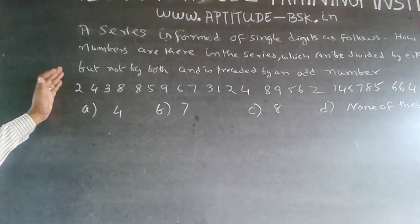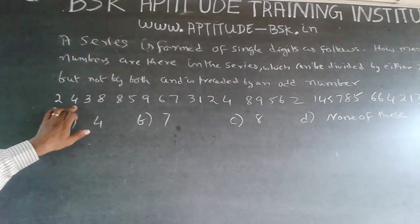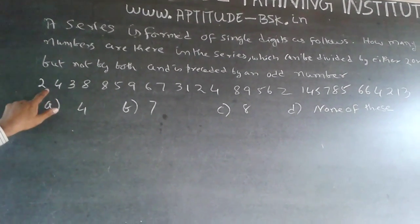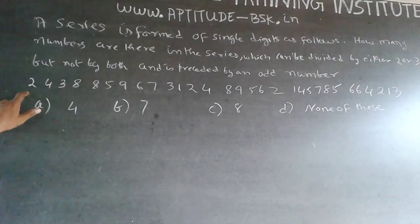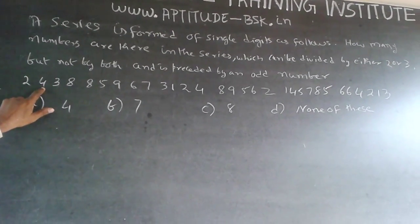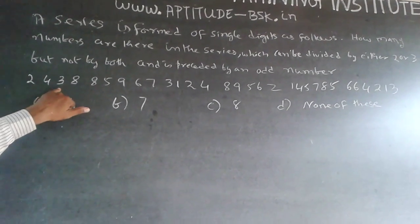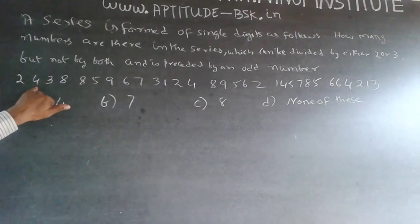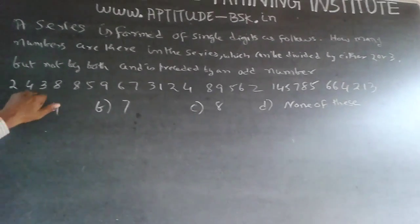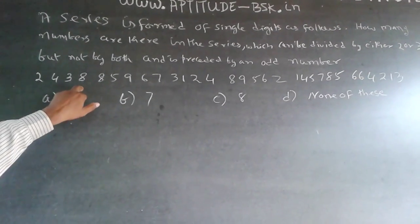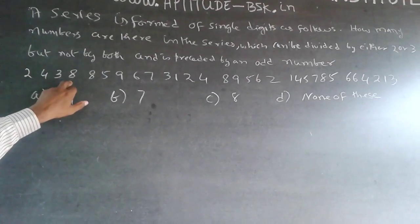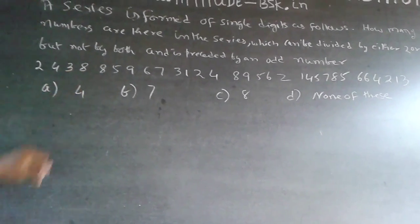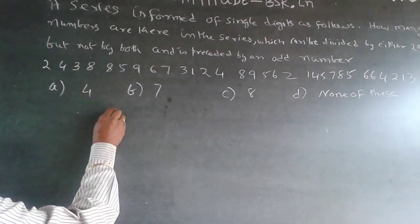The next number is 4 — divisible by 2, but the preceding number is 2, which is even, so it will not be taken into account. Then 3 is divisible by 3, but the preceding number is an even number, so it will not be taken into account. 8 is divisible by 2 and its preceding number is 3, which is an odd number, so the first qualifying number is 8.